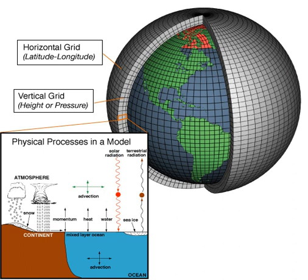The acronym GCM originally stood for general circulation model. Recently, a second meaning came into use, namely global climate model. While these do not refer to the same thing, general circulation models are typically the tools used for modeling climate, and hence the two terms are sometimes used interchangeably.